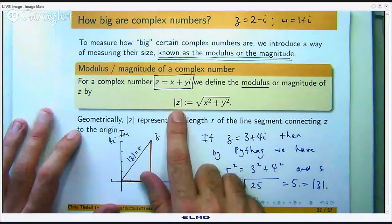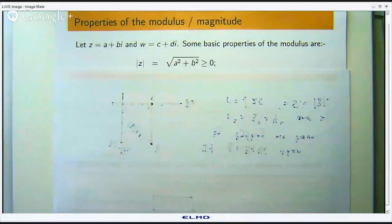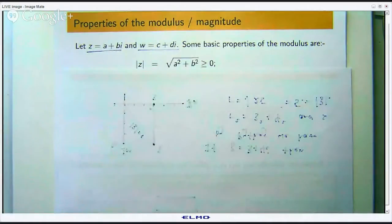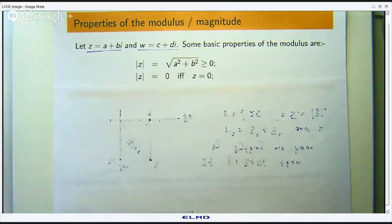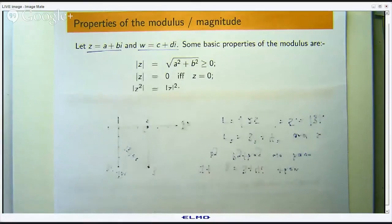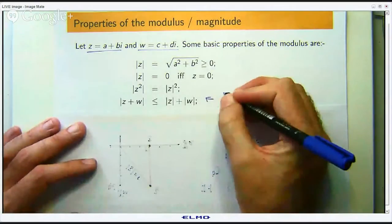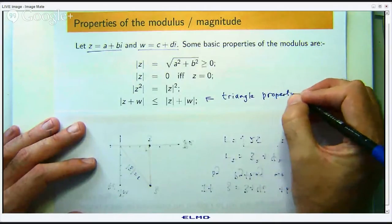The modulus has a number of properties. Suppose I have two complex numbers z and w. The modulus or length is always non-negative, and the modulus is zero if and only if the complex number z is zero. If you square a complex number and take the modulus, it is the same as taking the modulus first and then squaring. There is also what is known as the triangle inequality, which says that if you take two complex numbers and add them and take the modulus, that is always less than or equal to the sum of the two moduli.